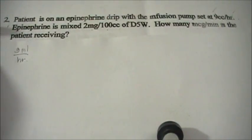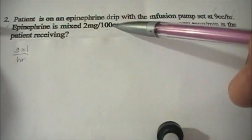9 ml per hour, okay. 9 ml per hour there. And then after that you want to write 2 milligrams per 100 ml. Okay, so 2 milligrams per how many ml again? 100 ml.